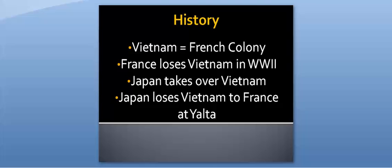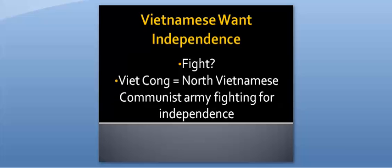Vietnam wanted to be independent and govern themselves, but at the Yalta Conference at the end of World War II, it was decided to give Vietnam back to French control. Following that, many Vietnamese decided to fight for their independence — they wanted independence and they didn't want French control. This should sound very similar to Korea and what happened there. The army that was fighting for independence became known as the Viet Cong, often referred to as VC for short.